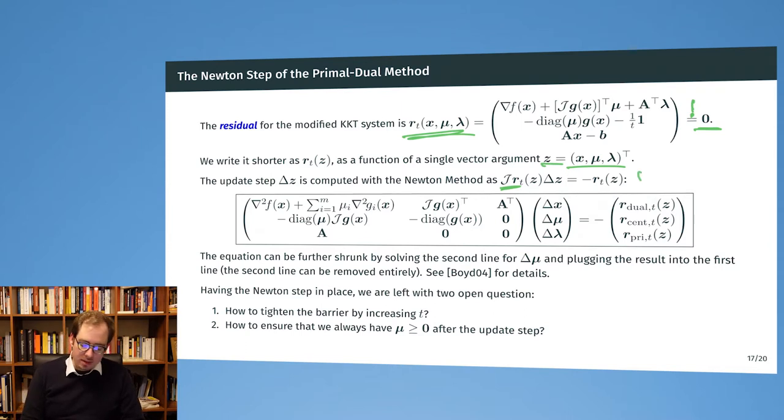Now we have a Newton step that we can do. This is just the Jacobian now of this r function, and we can think of this decomposed as the dual part, the second one we call the centering part, and the last one is the primal part.